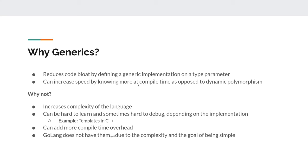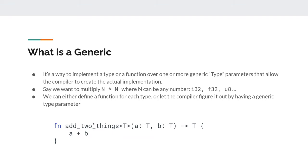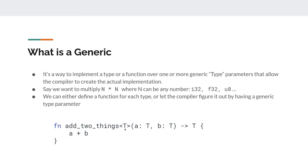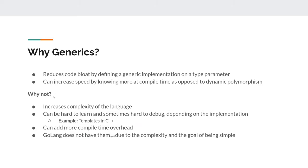It can increase the speed of your program because you will know more at compile time as opposed to, for example, dynamic polymorphism. If you were to define an interface for adding and then implemented that for all the types, then at runtime the compiler might have to figure out which function to call and use the V-table — the virtual table — to go through a pointer to figure out the actual function for the implementation. That's dynamic dispatch at runtime. With generics, you don't have to do that since the type is known at compile time.